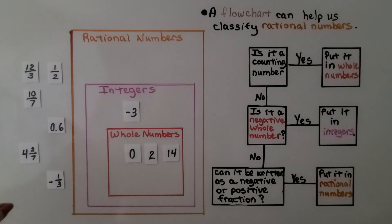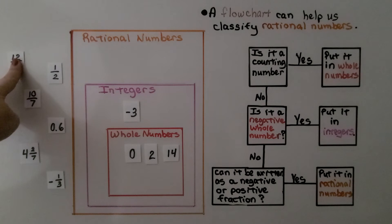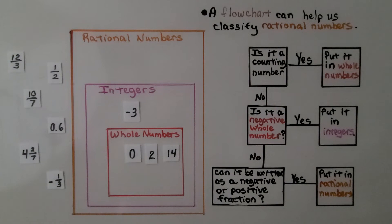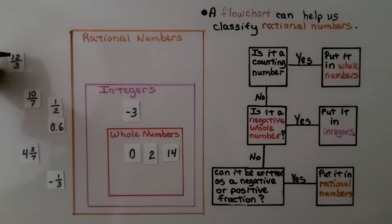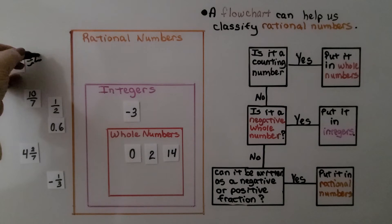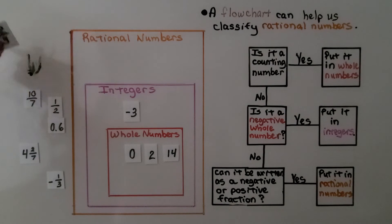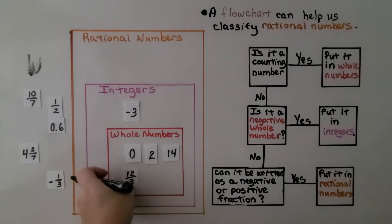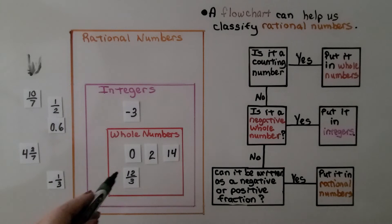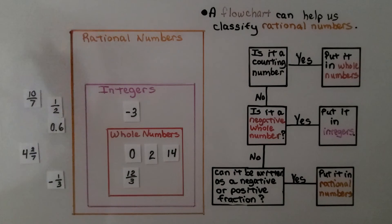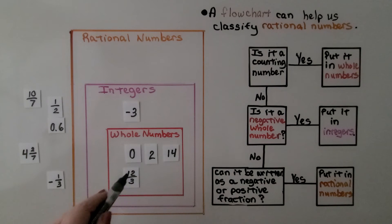Now look at twelve thirds. That looks like a fraction, but if we simplify — twelve divided by three equals four whole. So twelve thirds is actually the whole number four. We can put it into whole numbers. That's a tricky one because it looks written as a fraction, but when we simplify it, it's four whole — a whole number.